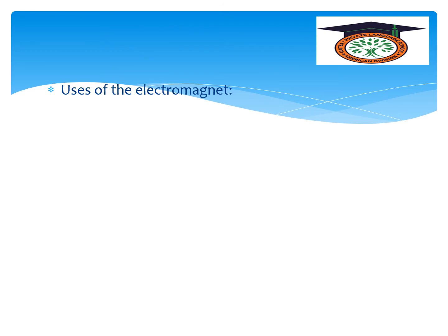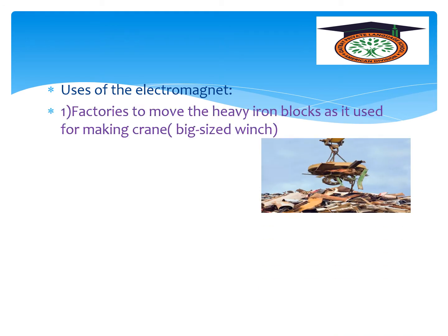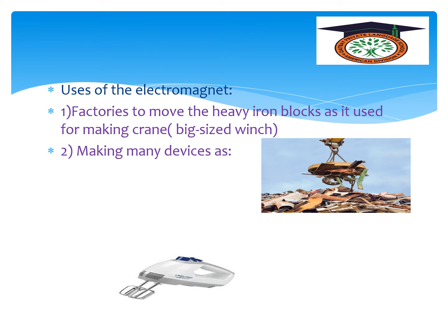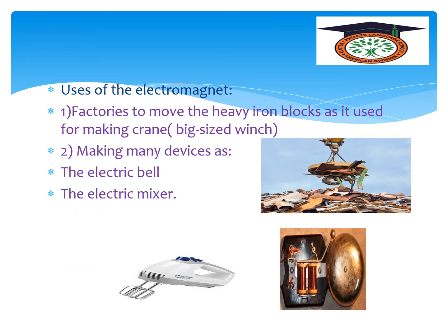The uses of the electromagnet: we use electromagnets in factories to move heavy iron blocks, as used in cranes or large winches. We also use them in making many devices that depend on the electromagnet, such as the electric mixer, electric bell, disk drive, and television.